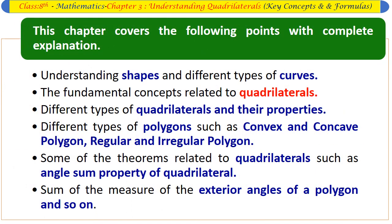This chapter covers the following points with complete explanation: understanding shapes and different types of curves; the fundamental concepts related to quadrilaterals; different types of quadrilaterals and their properties; different types of polygons such as convex and concave polygon, regular and irregular polygon; some theorems related to quadrilaterals such as angles and properties; and measures of the interior angles of a polygon.